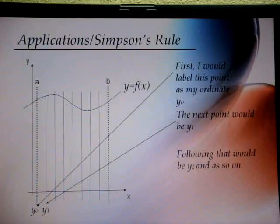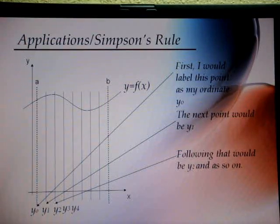Applications of Simpson's rule. For the area under the graph, I would first label the point as my ordinate y0 as shown here. Then, the next point would be y1, y2, and so on. The graph is divided into even number of strips.